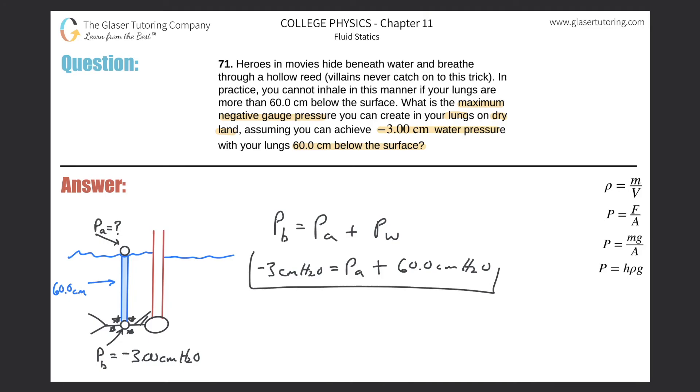So hopefully this equation now makes sense. And to solve for the pressure on dry air, all we got to do is subtract this value from both sides. So we realize that the pressure on dry air that this person has to create inside of their lungs is going to be negative 63.0 centimeters of water pressure.